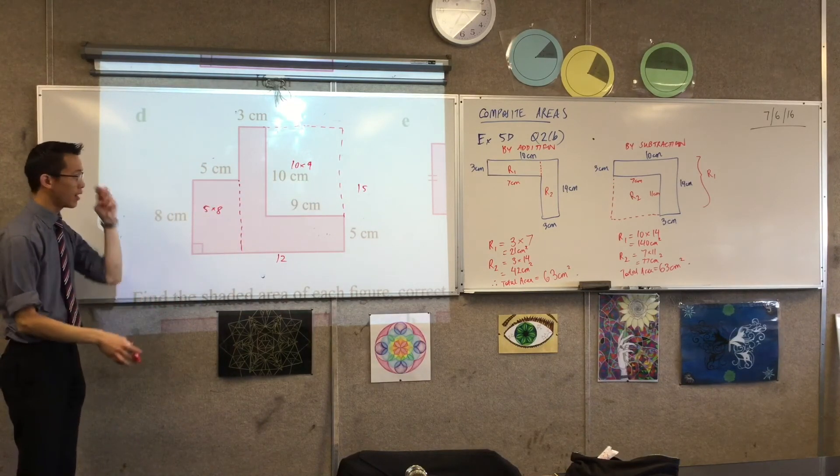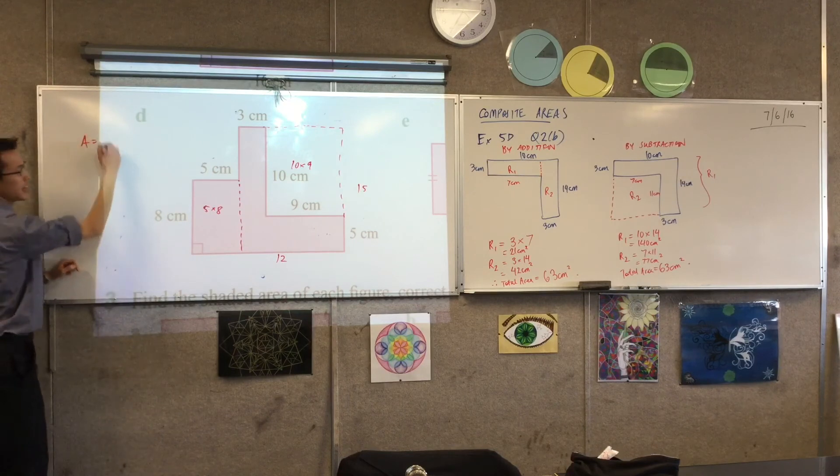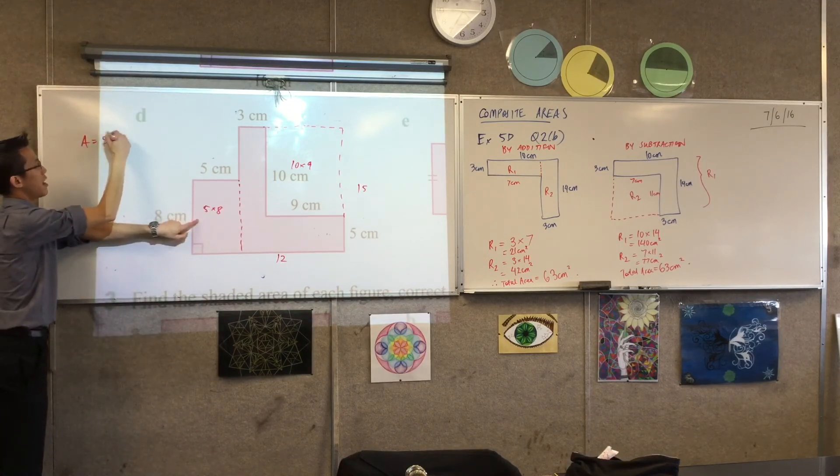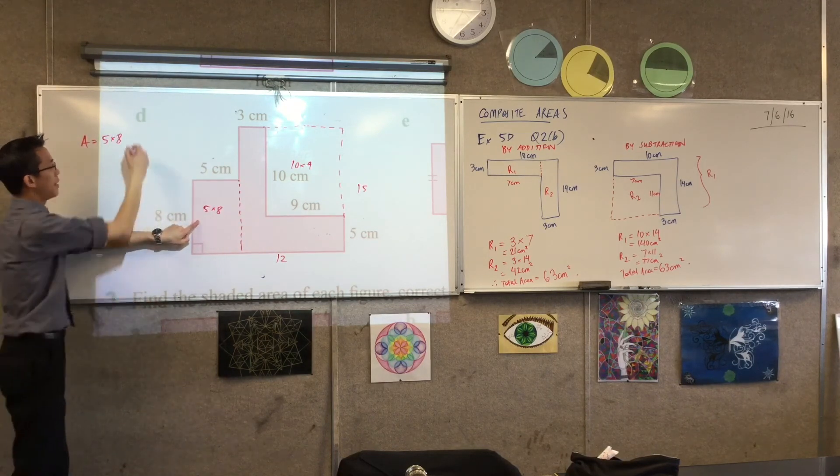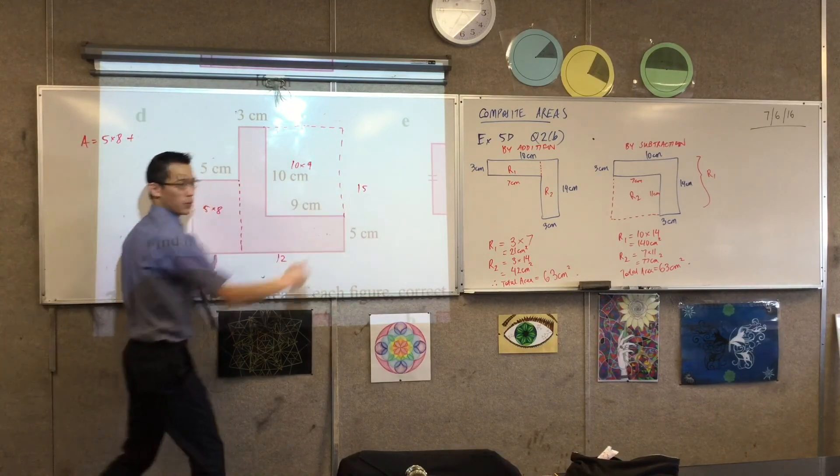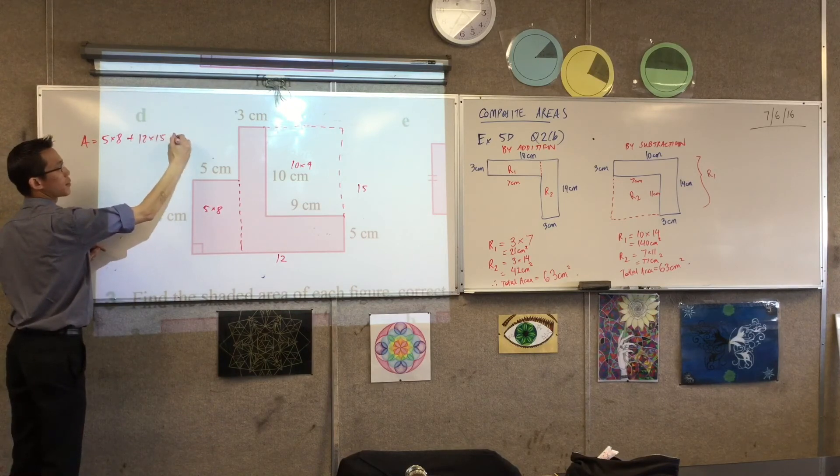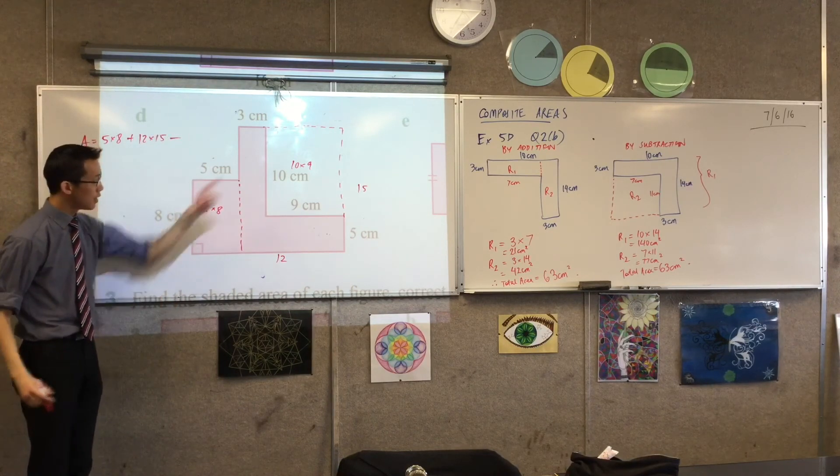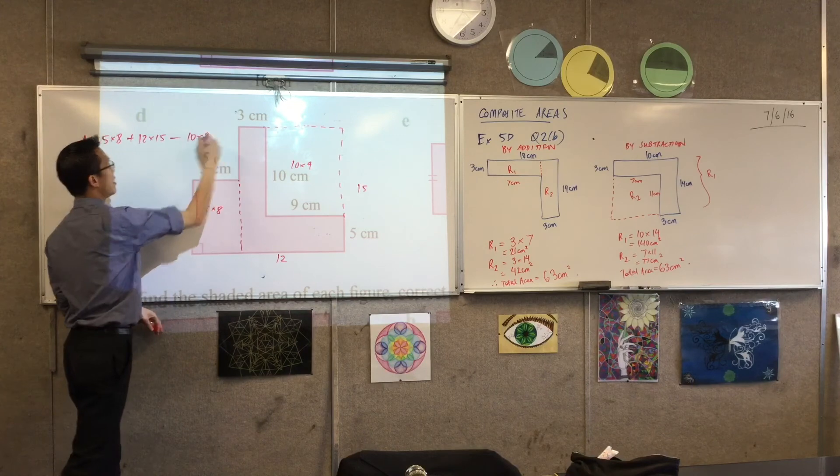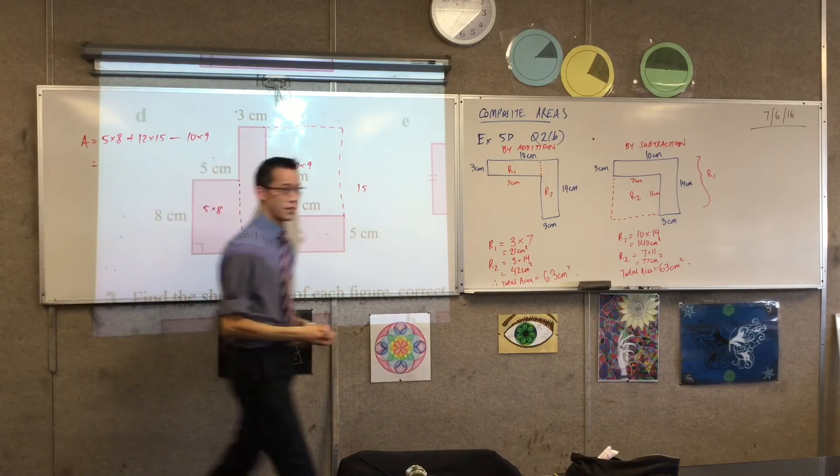Doing this a little bit quickly. I guess I would say the total area is equal to. Alright. We started with this guy. 5 by 8. I'm going to add this big one here. Which is, what is it again? 12 by 15. And then I'm going to subtract 10 by 9. Now, I don't know what that's equal to. But I'm pretty confident that'll give you the right answer. Clearly, you could divide it up different ways.